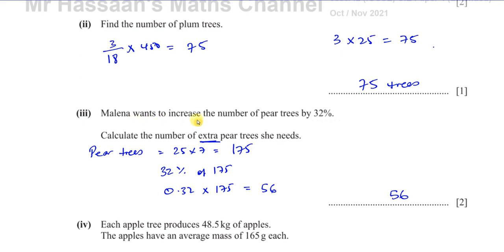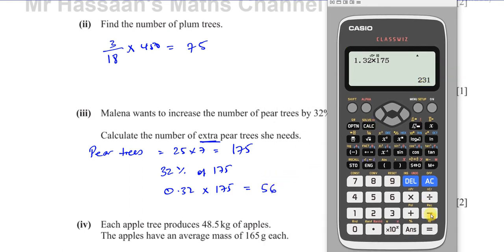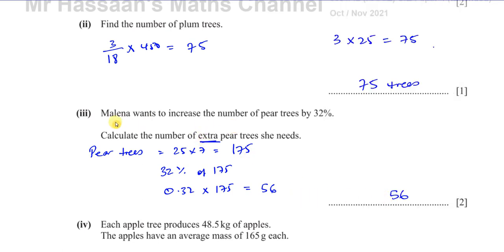In most cases when it says you want to increase the number of something, you multiply by 1.32 to get the new amount including the extra amount. But here they just want the extra amount. If you subtract the original amount from the increased total, that gives you 56. A very common mistake is to read 'increase by 32%' and multiply by 1.32, getting the wrong answer. You must read all the words — it says 'calculate the number of extra pear trees she needs.' That would probably be a very common mistake mentioned in the examiner's report.